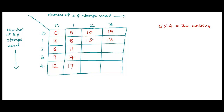Similarly, if the entry is thirteen, the value three more is sixteen, then nineteen, then twenty-two. For the next column: eighteen plus three is twenty-one, twenty-one plus three is twenty-four, and twenty-four plus three is twenty-seven.